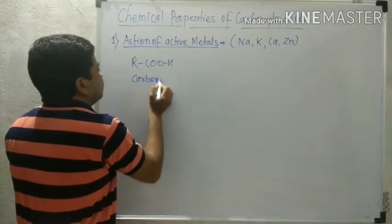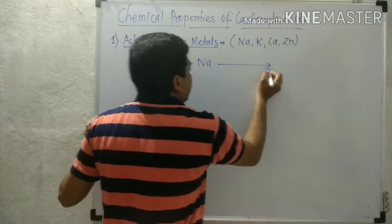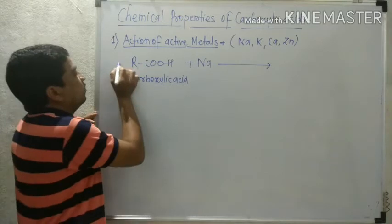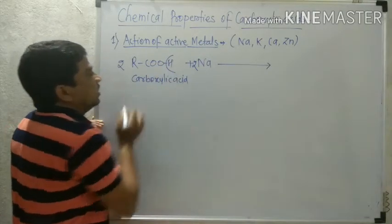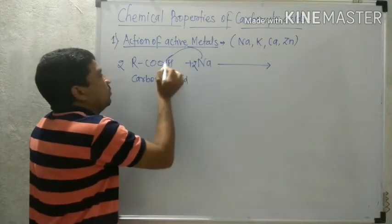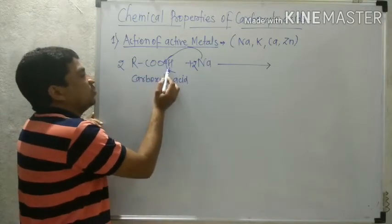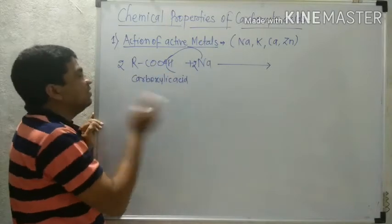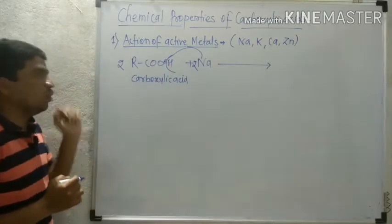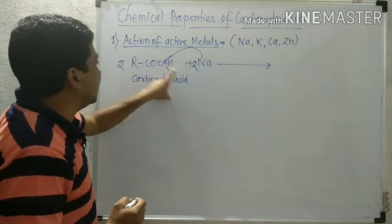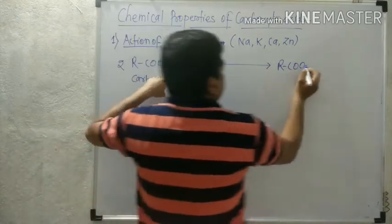When carboxylic acid (RCOOH) reacts with an active metal like sodium (Na), if two molecules of carboxylic acid and two atoms of sodium are taken, one hydrogen atom from each carboxylic acid molecule is replaced by sodium. From the first molecule, one hydrogen atom gets eliminated and sodium attaches in its place. Similarly in the second molecule, the hydrogen is separated and a sodium atom attaches to the oxygen.